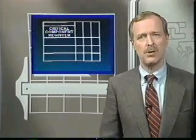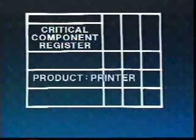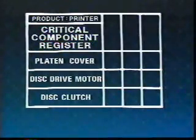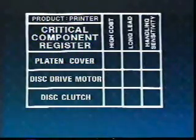To assure that appropriate action is taken with respect to critical features, you can use a criticality analysis spreadsheet. An example is the critical component register, a form of spreadsheet used by Rank Xerox Limited — reproduced in detail in your action guide. Here the application is to product components of a printer. Each component is listed on a row; one of these components is the platen cover. Categories of criticality are listed in the columns: high cost, long lead,